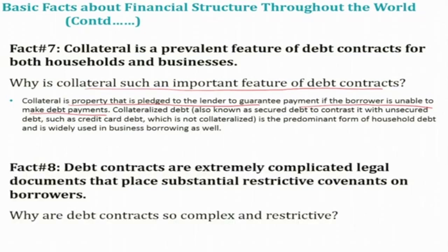The eighth and final fact: debt contracts are extremely complicated legal documents that place substantial restrictive covenants on borrowers. Even when you get a loan, there are many restrictive covenants you must follow when using those funds. Why are debt contracts so complex and restrictive?